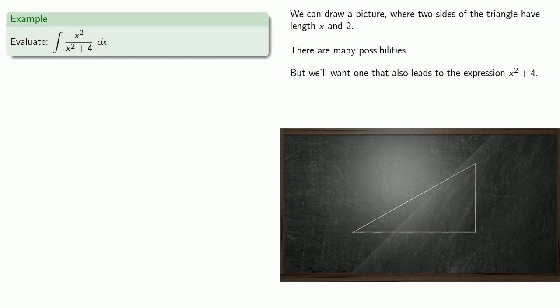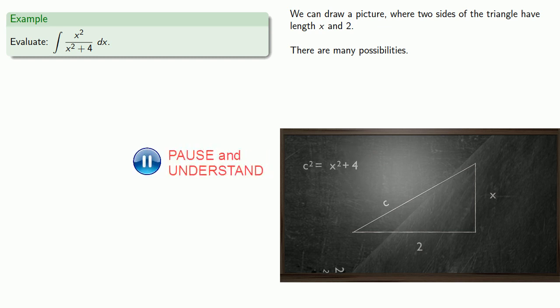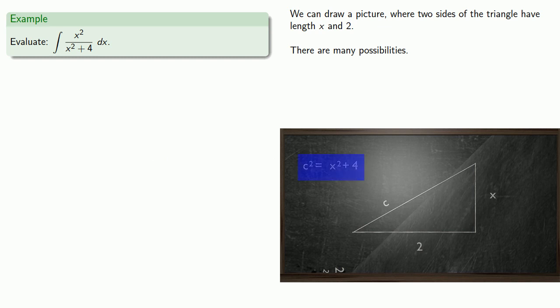If you don't play, you can't win. So let's just put down x and 2 and our third side c, and see what happens. Since we have three sides of a right triangle, we can use the Pythagorean theorem to write a relationship between the three sides. We see that the expression x squared plus 4 comes up naturally if we make these choices for the sides of our triangle.